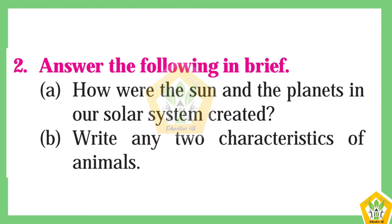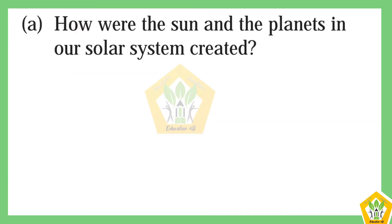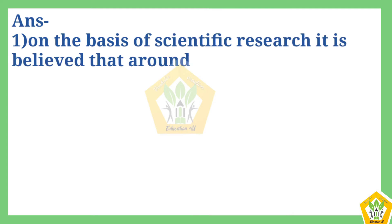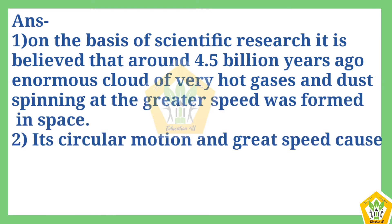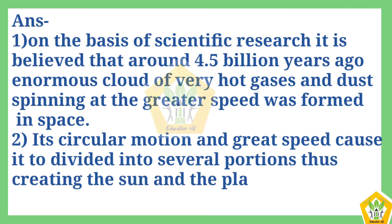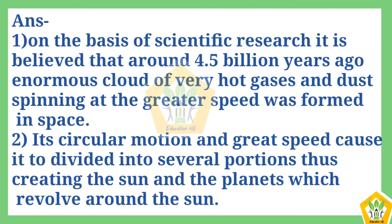Question number 2. Answer the following in brief. A. How were the sun and the planets in our solar system created? The answer is: on the basis of scientific research, it is believed that around 4.5 billion years ago, a numerous cloud of very hot gases and dust spinning at greater speed was formed in space. Its circular motion and great speed caused it to be divided into several portions, thus creating the sun and the planets which revolved around the sun.